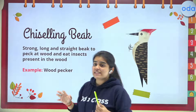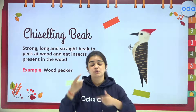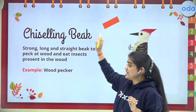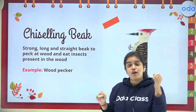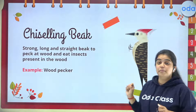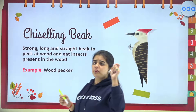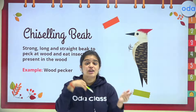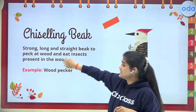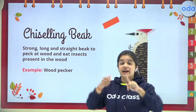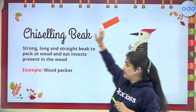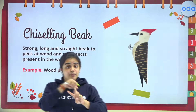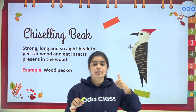The fourth type is the chiseling beak. It is strong and long. The example is the woodpecker. Woodpeckers need a strong beak because they have to peck at wood continuously to make their nests. They also need a long beak to eat insects present inside the wood. That's why woodpeckers have a strong, long, and straight beak called the chiseling beak.